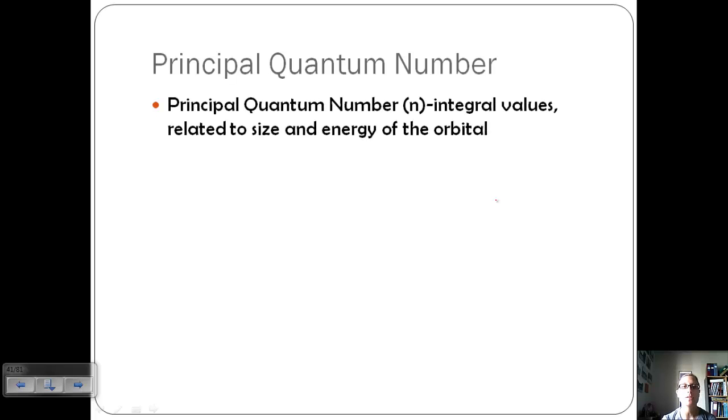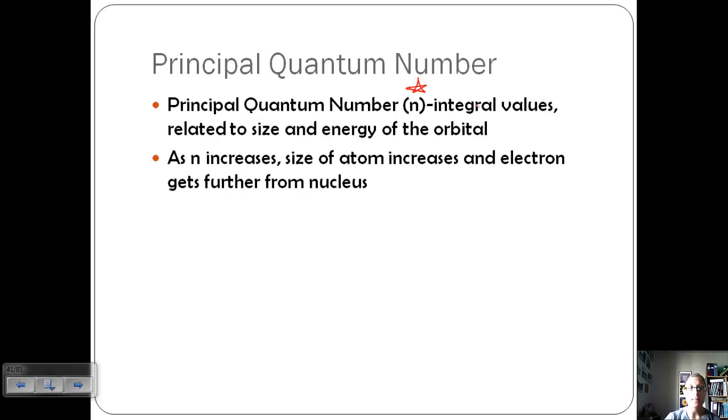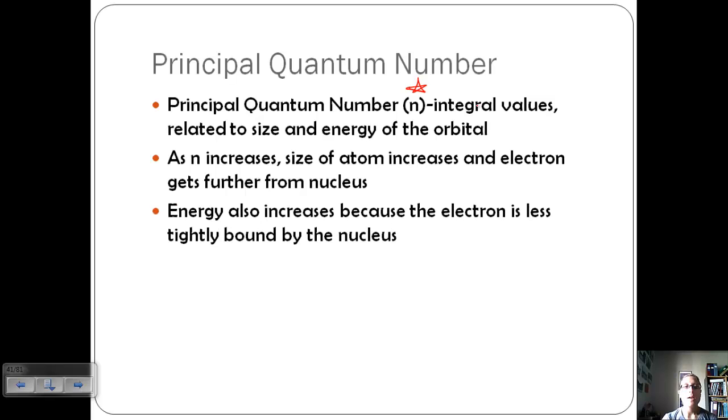Let's look at the principal quantum number first. The principal quantum number is represented with a small n. These are integral values, meaning it will only be one, two, three, four, never a decimal or half. These represent or are related to size and energy of the orbitals. As n increases, the size of the atom is going to increase and the electron is going to get further from the nucleus. If we have n equals one, we have a relatively small atom. N equals four, we have a larger atom, that electron is further from the nucleus. Because the electron is further from the nucleus, it's less tightly bound, which means it's also going to have more energy. So as we increase the principal quantum number, we increase the amount of energy.